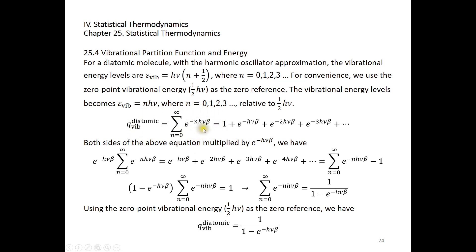It's easy to evaluate this. We first expand the sum to be 1 plus e to the power of negative h nu beta, plus e to the power of negative 2 h nu beta, plus e to the power of negative 3 h nu beta, etc. Both sides of this equation are then multiplied by e to the power of negative h nu beta, giving: e to the power of negative h nu beta times the sum equals e to the power of negative h nu beta, so this 1 becomes the first exponential term, and each successive term shifts by one.